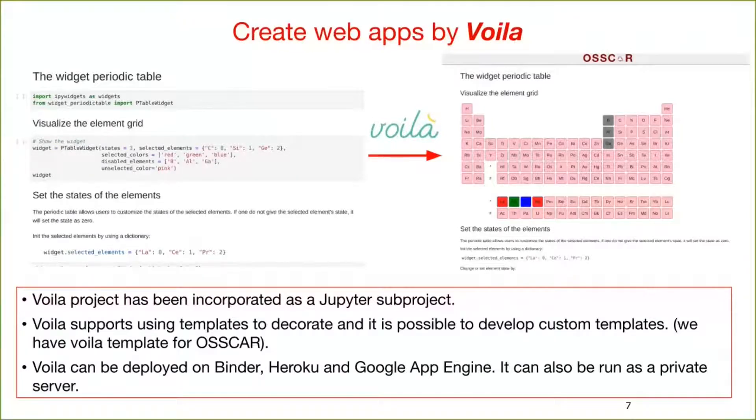Voila has been incorporated as a Jupyter subproject. Voila also supports the usage and development of templates, which can be used to decorate the web pages. We developed our own Oscar Voila template. Voila can also be deployed on Binder, Heroku, Google App Engine, or it can also be run as a private server.